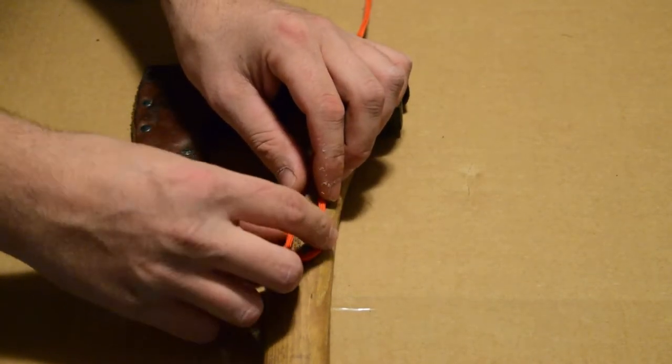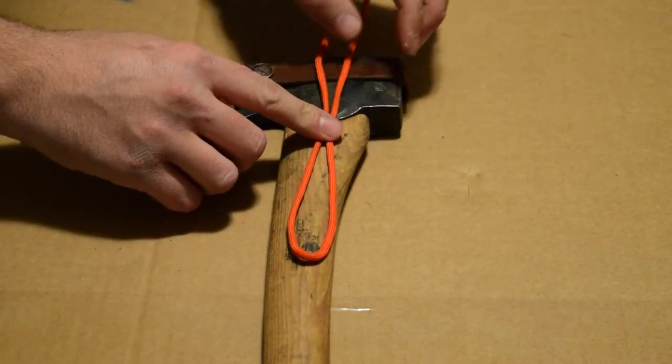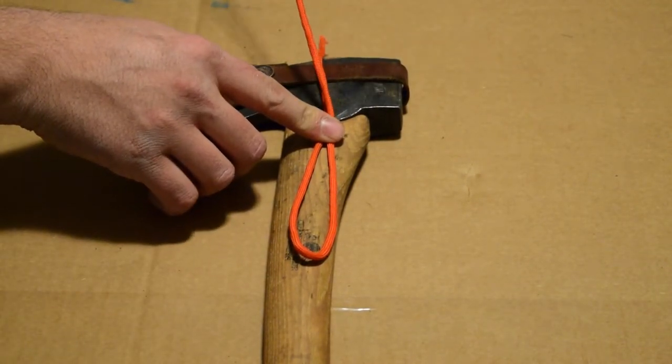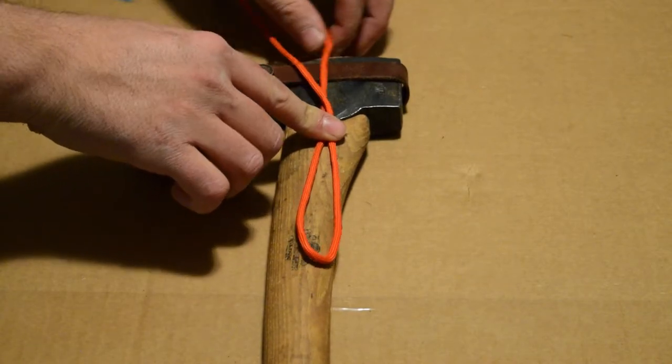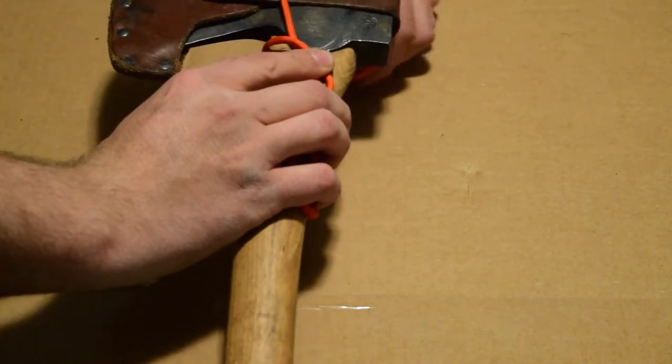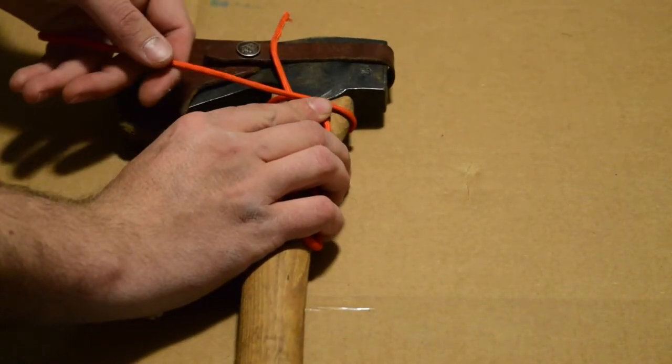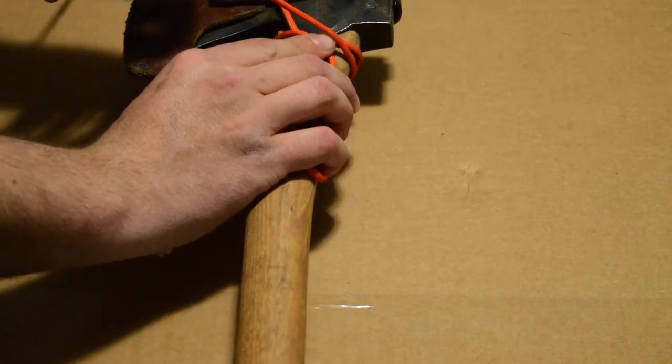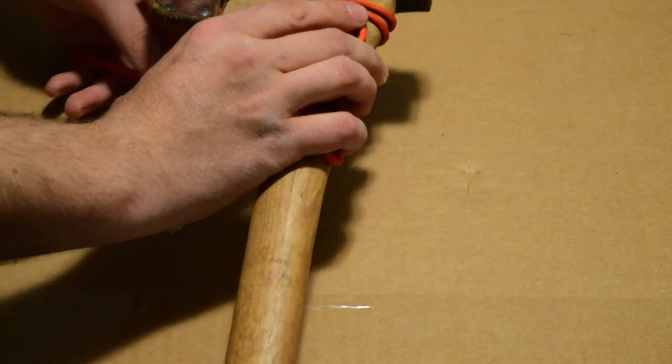And then from there, all we're going to do is we're going to take the long, the rest of your paracord and we're going to start wrapping around your loop that you had made. So as you guys can see, I'm just kind of going down. Now you don't want to do this real tightly.